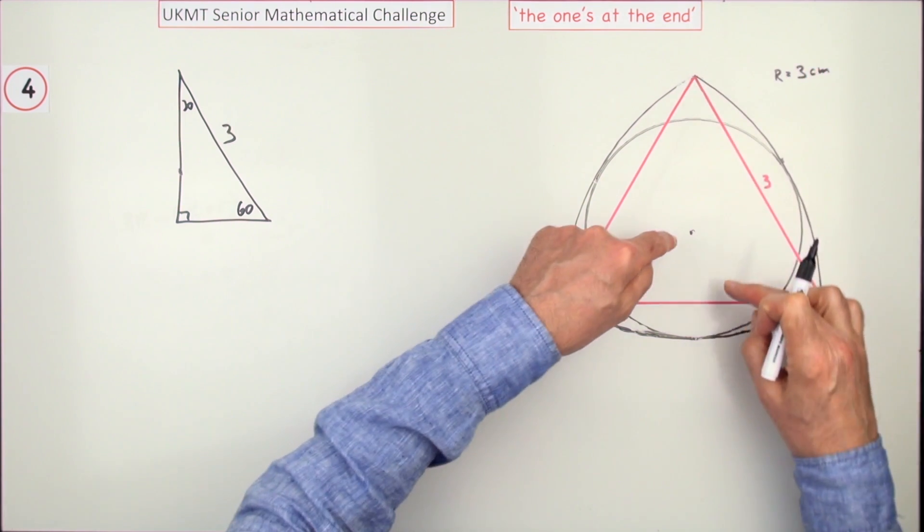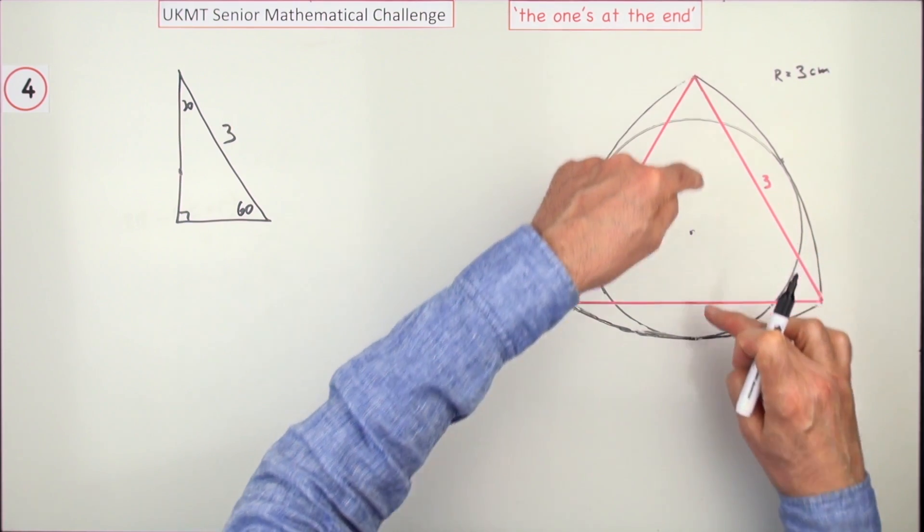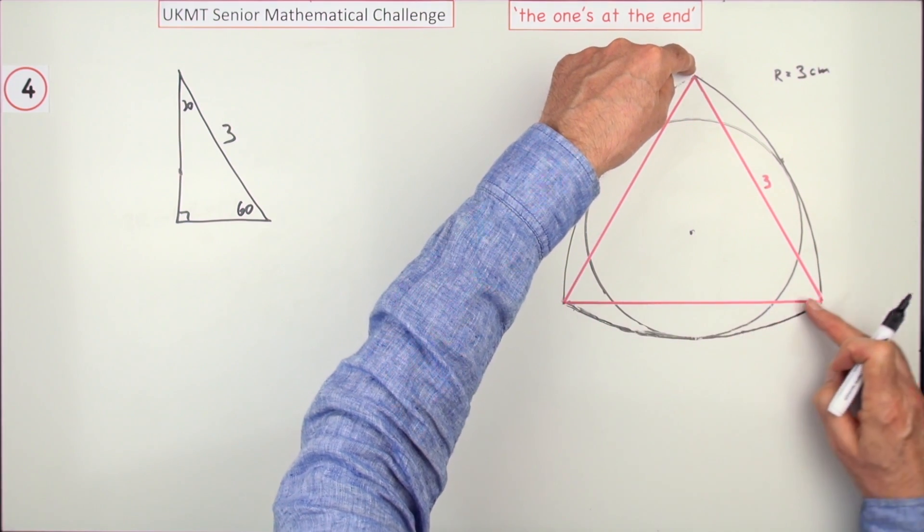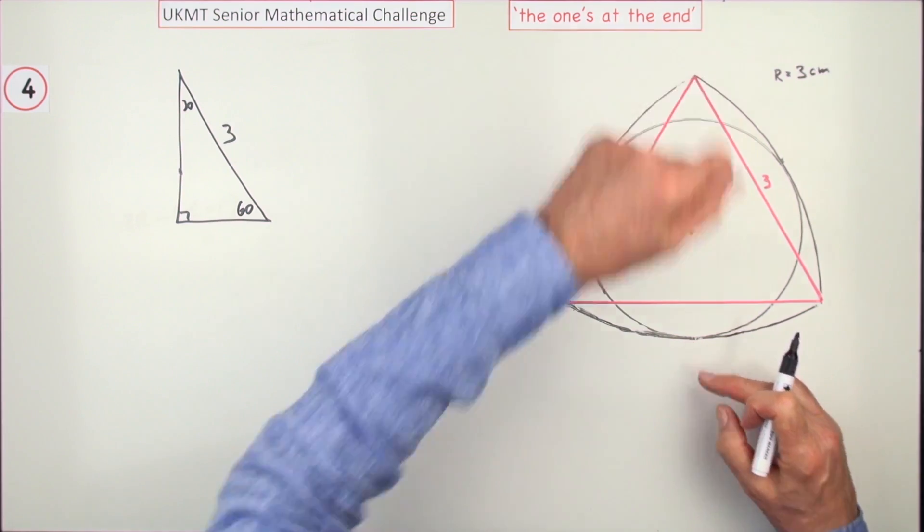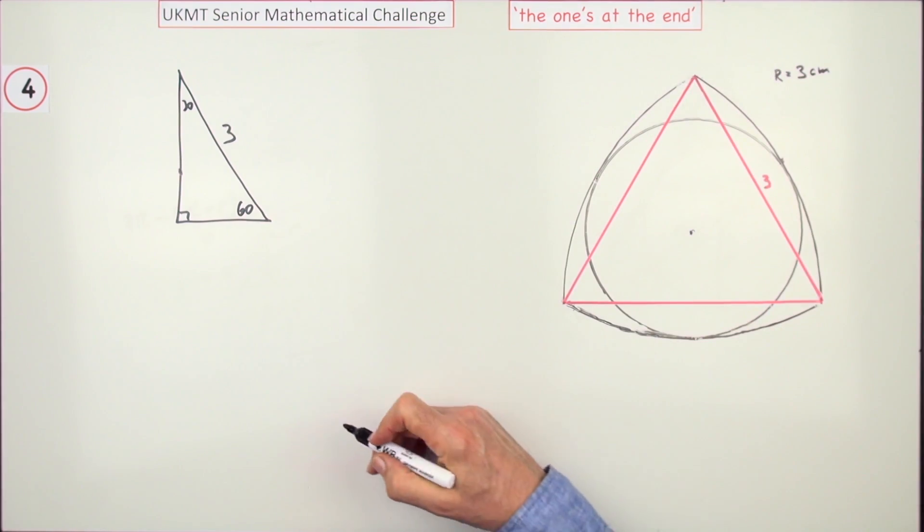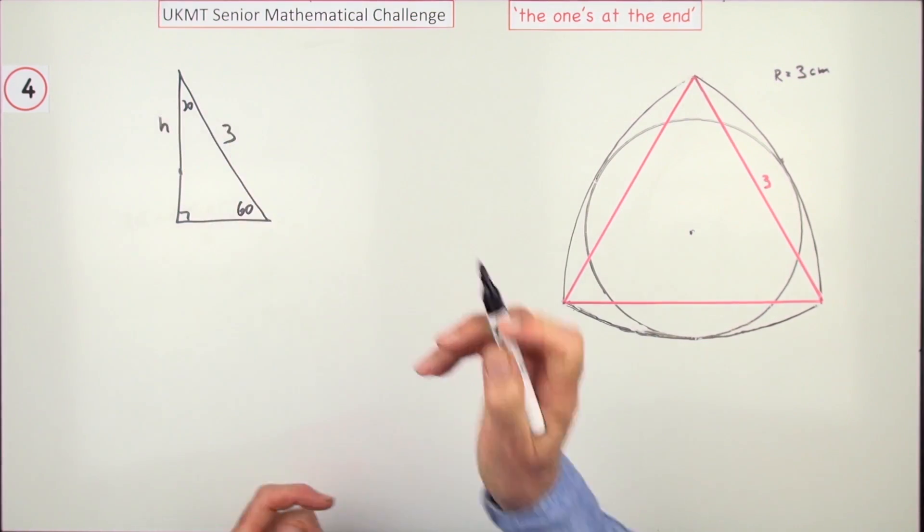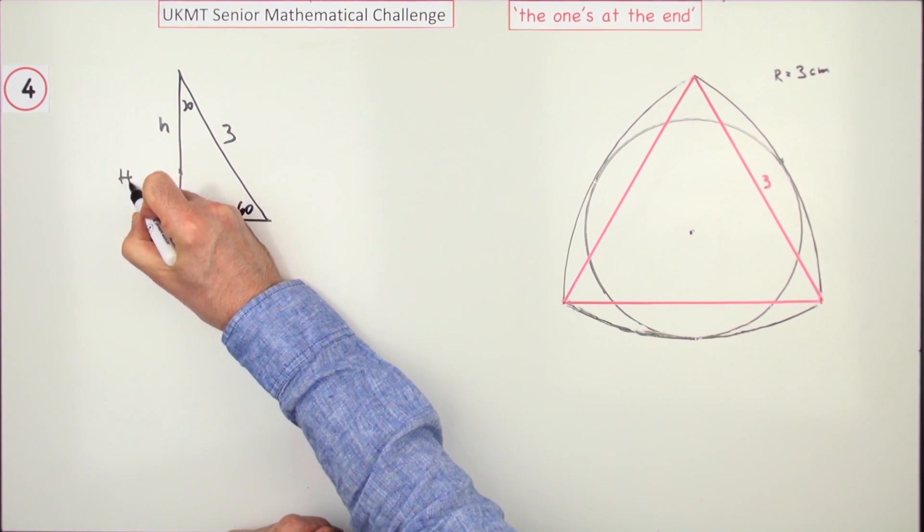Because all together that's the radius - it's three all together. So the plan is, what's this part here? What's this little height here? First of all, work out the total height.